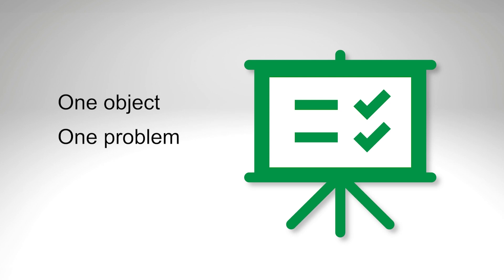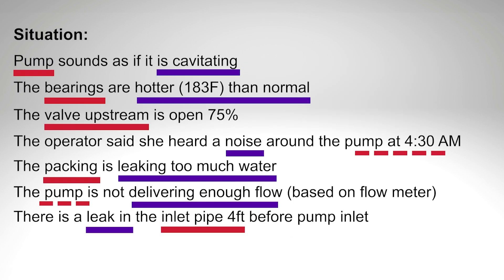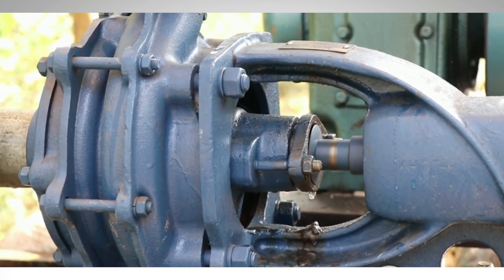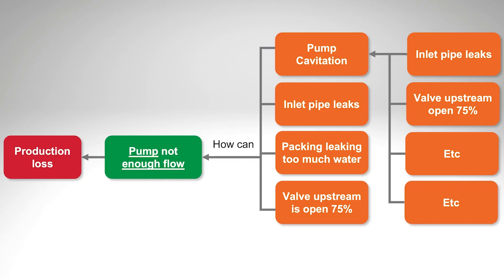Now you're thinking: what am I going to do with all this information, and what do I pick? You need to pick one problem from the list. It depends on what you're trying to solve — maybe you want to solve why the bearings are hot, and that's fine, but you can't assume that's going to fix the problem with the flow. Reading this list, I'm going to guess that the most important thing is to solve why we don't have enough pump flow. So I'm making pump flow my problem statement. I'll do a cause-and-effect — we call it the 'how-can' diagram. The trigger is some type of production loss, and my problem statement in green is: pump not delivering enough flow. I have one object — the pump — and one problem — not enough flow. I could quantify this in gallons per minute or whatever unit you use.